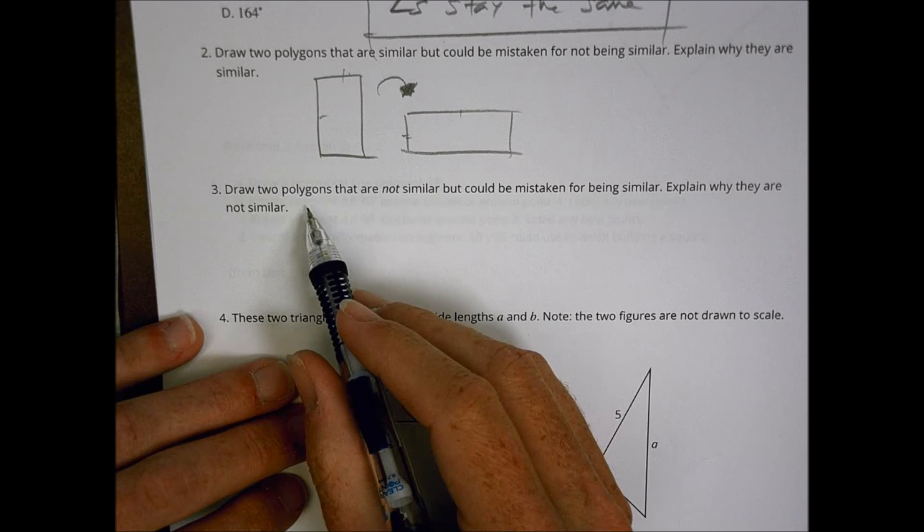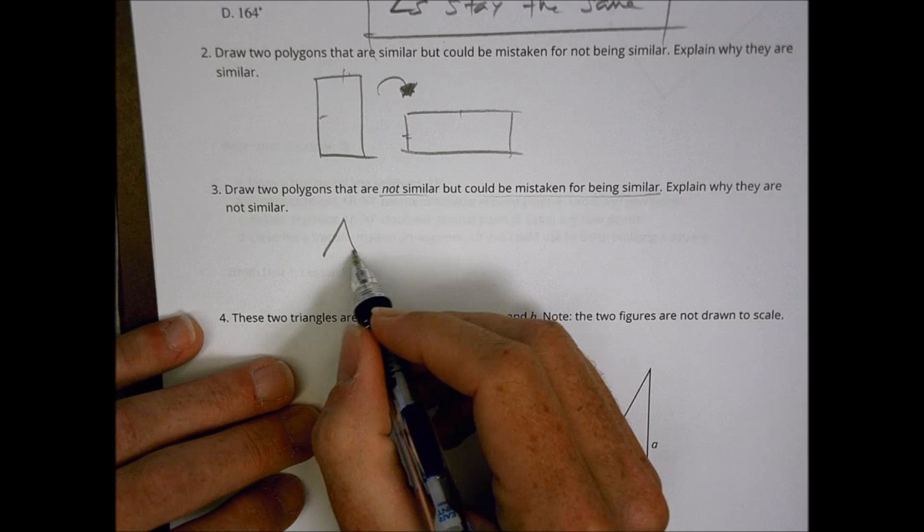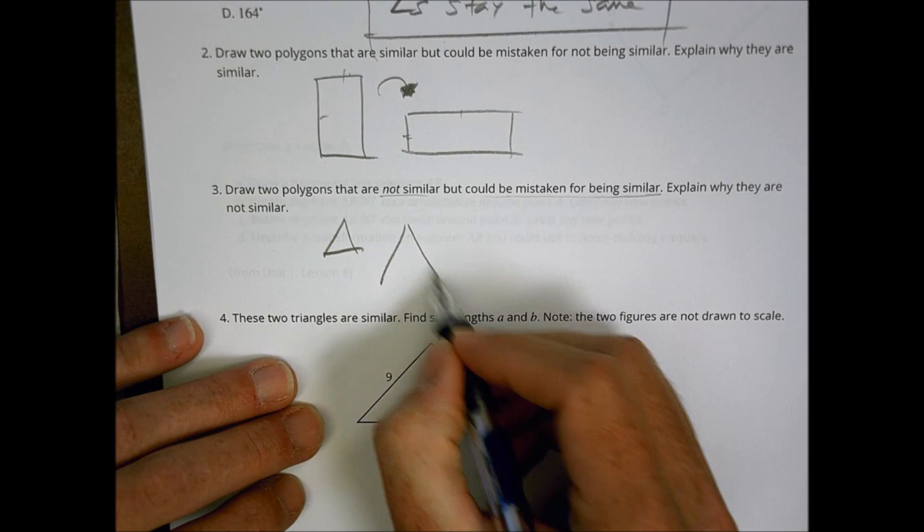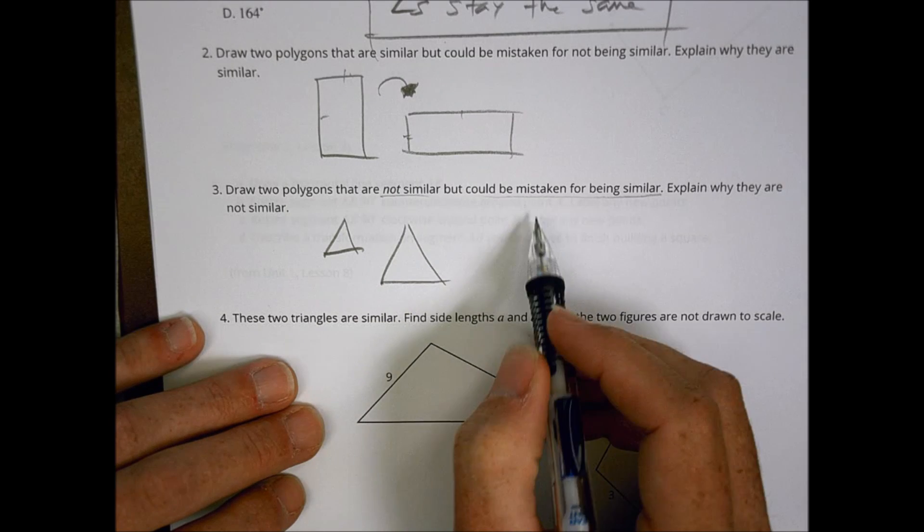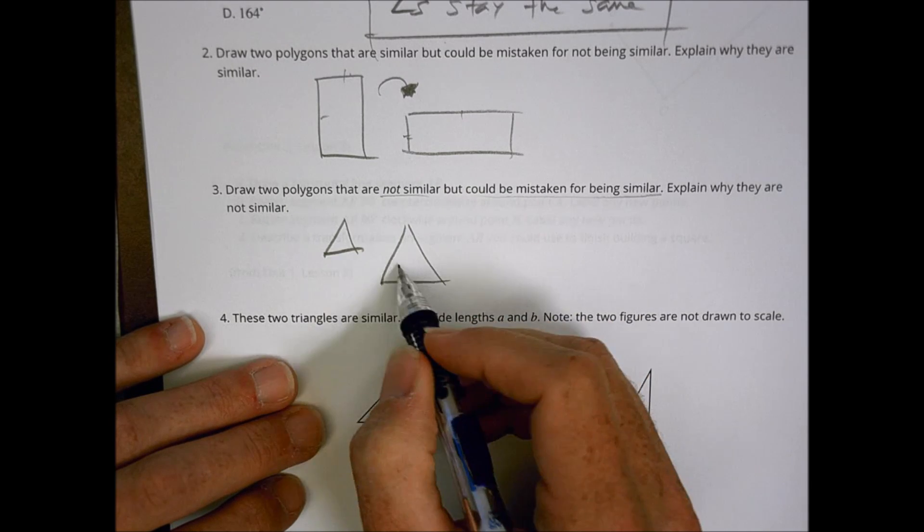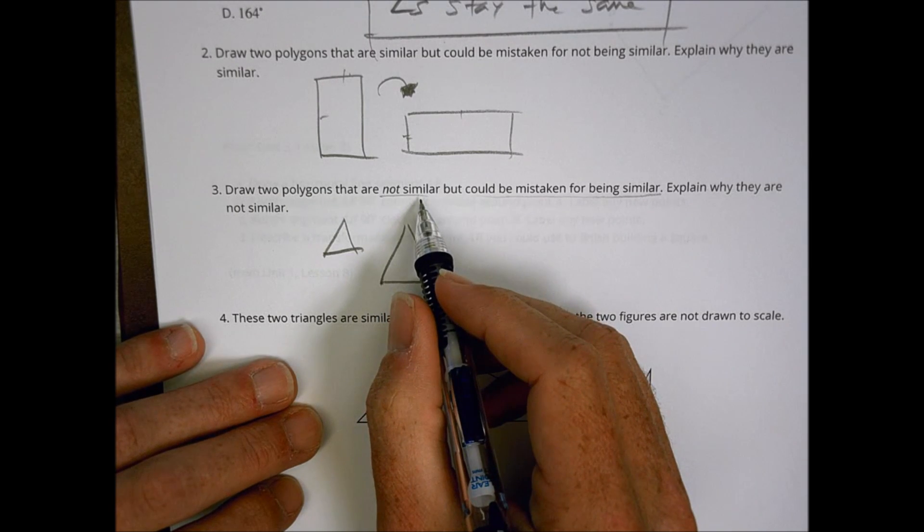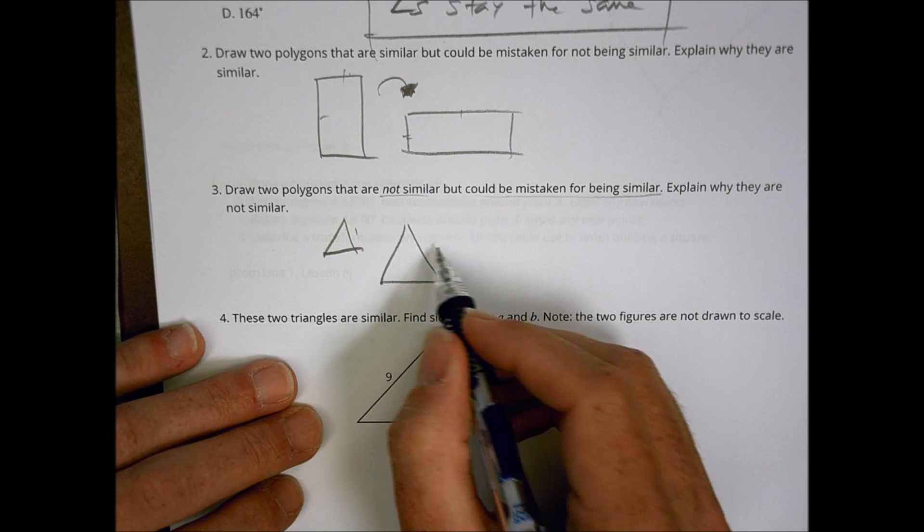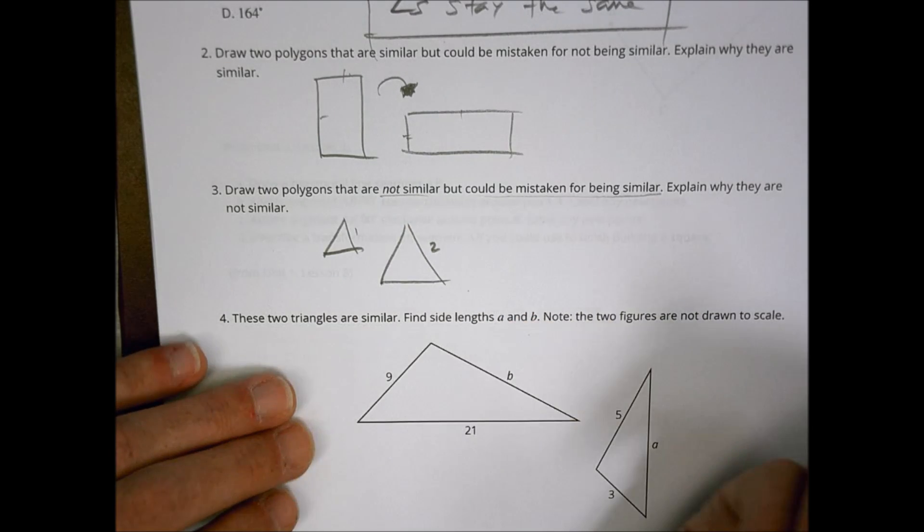If I had two polygons that are not similar but could be mistaken for being similar, explain why. Well, this might be going to have like a triangle for example. If I had a triangle where they are not similar but then people might think they're similar because they are the same shape and maybe they look proportional to each other, that doesn't mean that they are going to be similar because the side lengths might be different. And that means they are not necessarily similar.